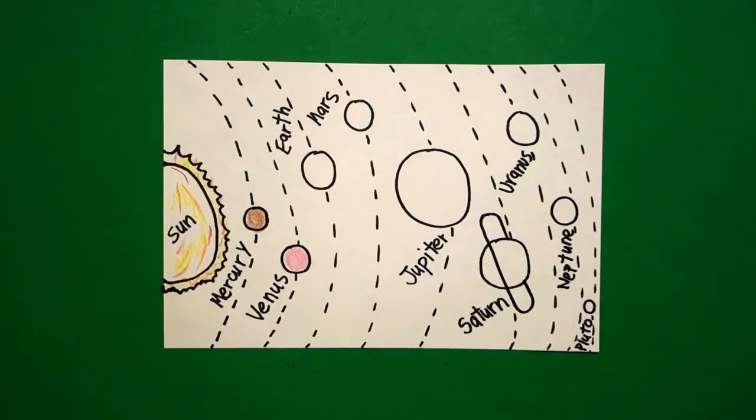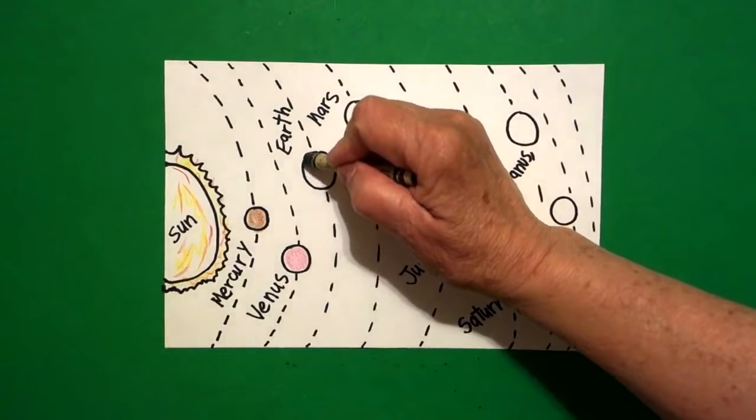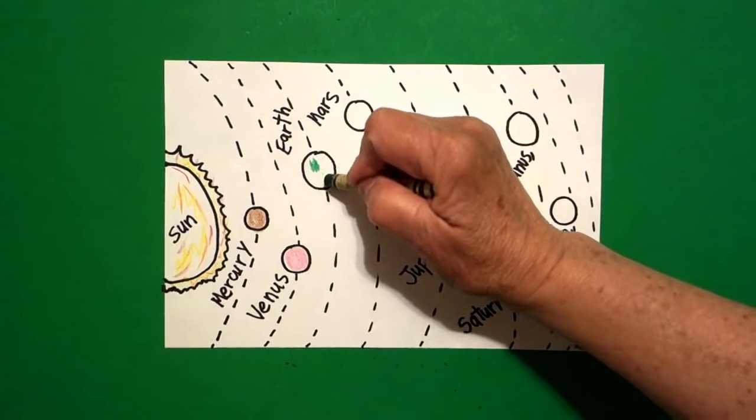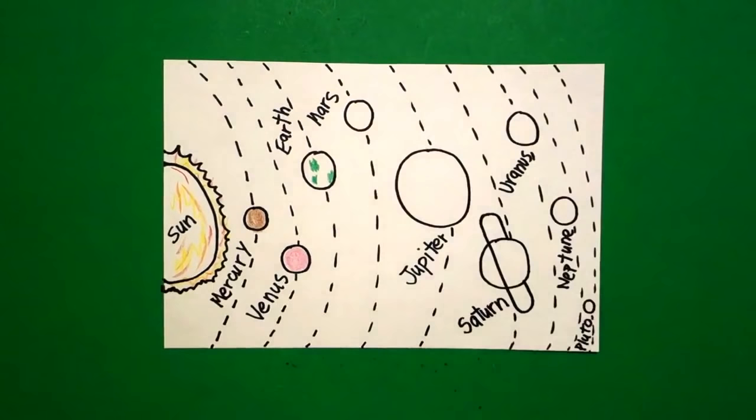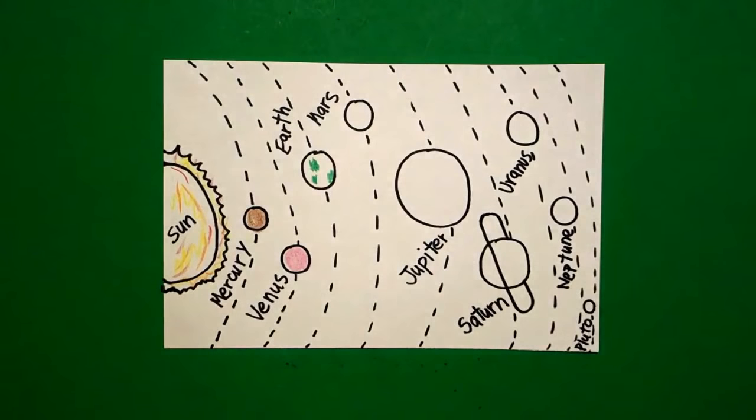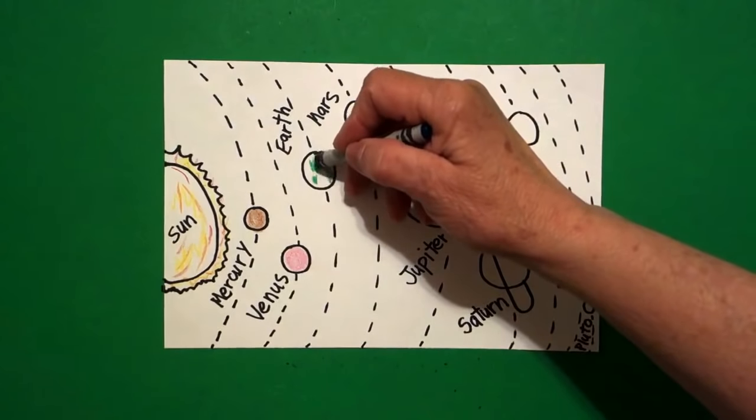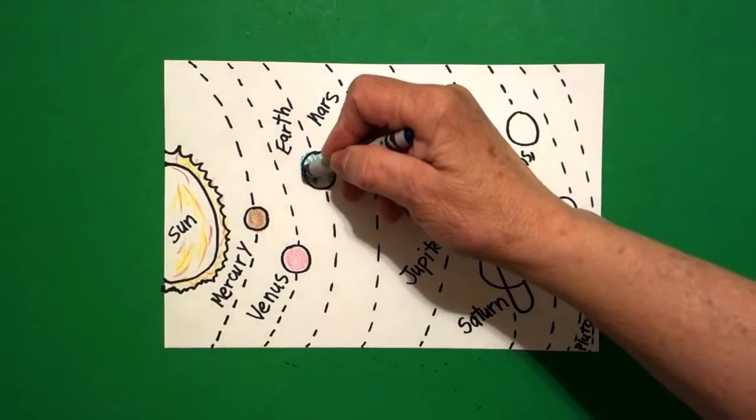Next comes Earth. On Earth, I did a little bit of scribble-scrabble green. That's our continents. And then I came back with my blue-green, turquoise blue. And I colored it around those greens to make my oceans.